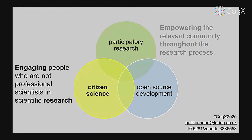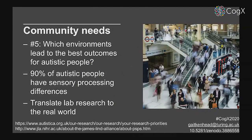Citizen science involves engaging people who are not professional scientists in scientific research. The reason we decided citizen science was such a good way of investigating this question is that it's scalable — we can reach many more people, and we need to in order to produce a data set that's actually useful for having the impact of adapting environments. It also means that people who may not be able to attend a focus group session in person have the chance to do so online.